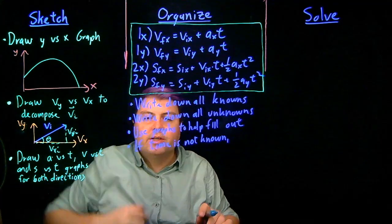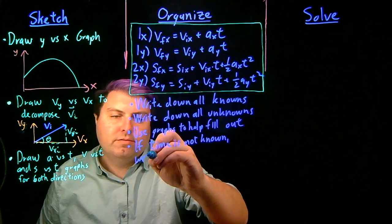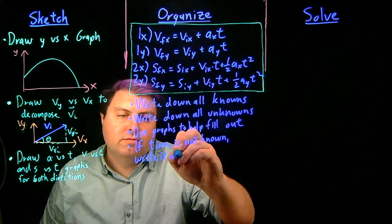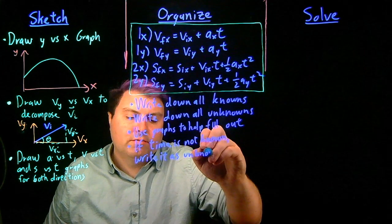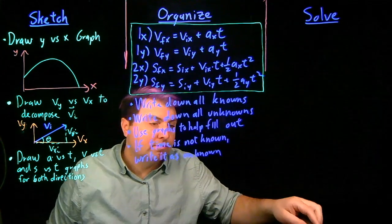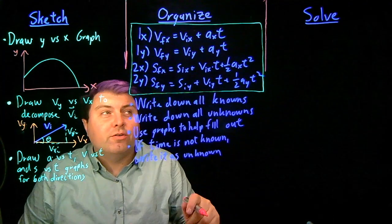And then if time is not known, since it's our connecting thing between equations, write it as unknown. So that's our organized step.